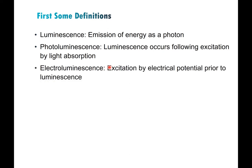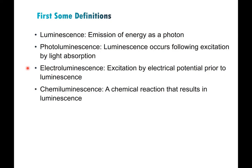Another subcategory somewhat relevant to our work, although we don't study it in our own lab, is electroluminescence, where the excited state energy is provided by an electrical potential prior to luminescence. Electroluminescent devices include things like OLEDs — any time you're using electrical energy to convert into light. The other type, which we really won't talk about at all, is chemiluminescence, where a chemical reaction generates an excited state as a product that then results in luminescence.